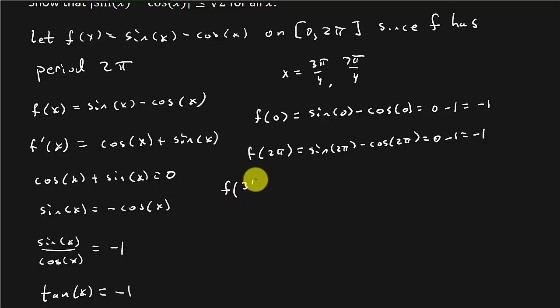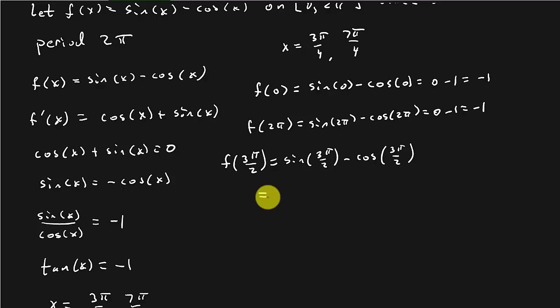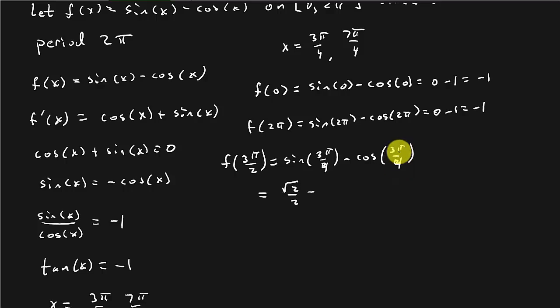Now let's calculate f of 3 pi over 4. That's sine of 3 pi over 4 minus cosine of 3 pi over 4. Our reference angle is pi over 4, and we're in the second quadrant where sine is positive. So the sine of pi over 4 is square root of 2 over 2, positive. And the cosine of pi over 4 is square root of 2 over 2, but in the second quadrant cosine is negative — so we subtract negative square root of 2 over 2. That gives us 2 times square root of 2 over 2, which equals square root of 2.